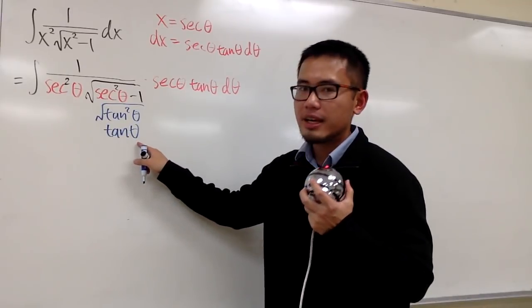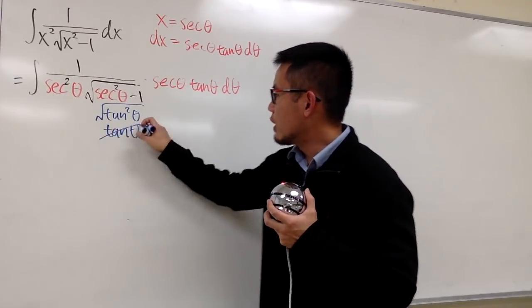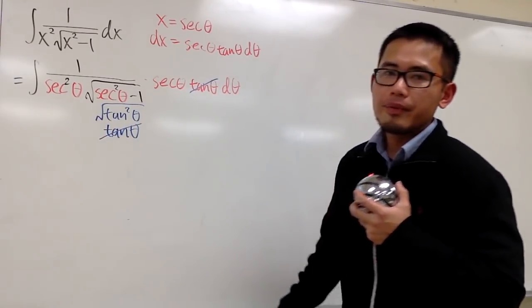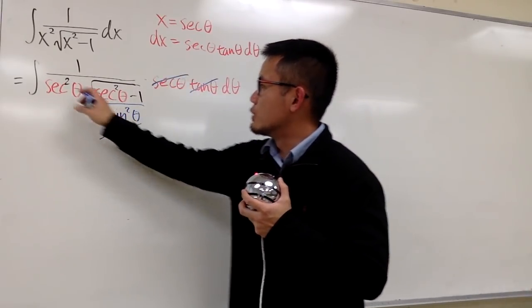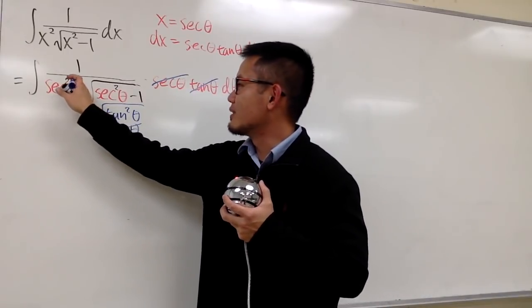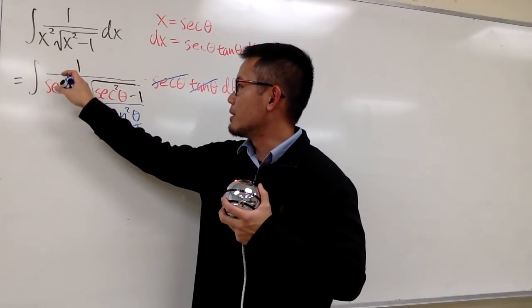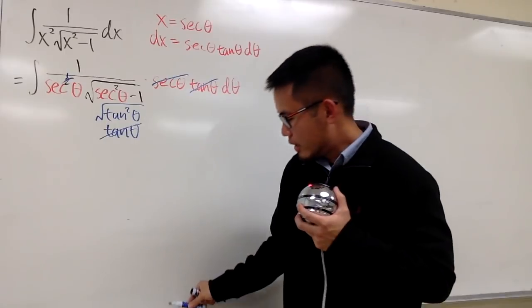And now we see, we have this tangent theta in the denominator. We can cancel out with this tangent theta. And also, we have this secant theta, I can cancel this out with one of this secant squared theta. So let me cancel this out, and now it becomes just 1.